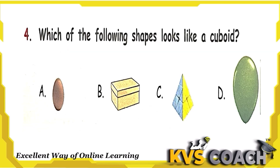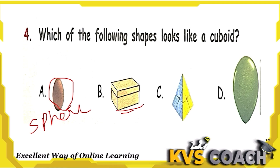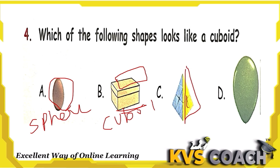The next question is: which of the following shapes looks like a cuboid? This is a circle, and a circle makes a sphere. Here is a box — its surface is like a rectangle, and a rectangle makes a cuboid. This is a cone, and this is an oval shape. So the cuboid is made by option B. Option B is the right answer.